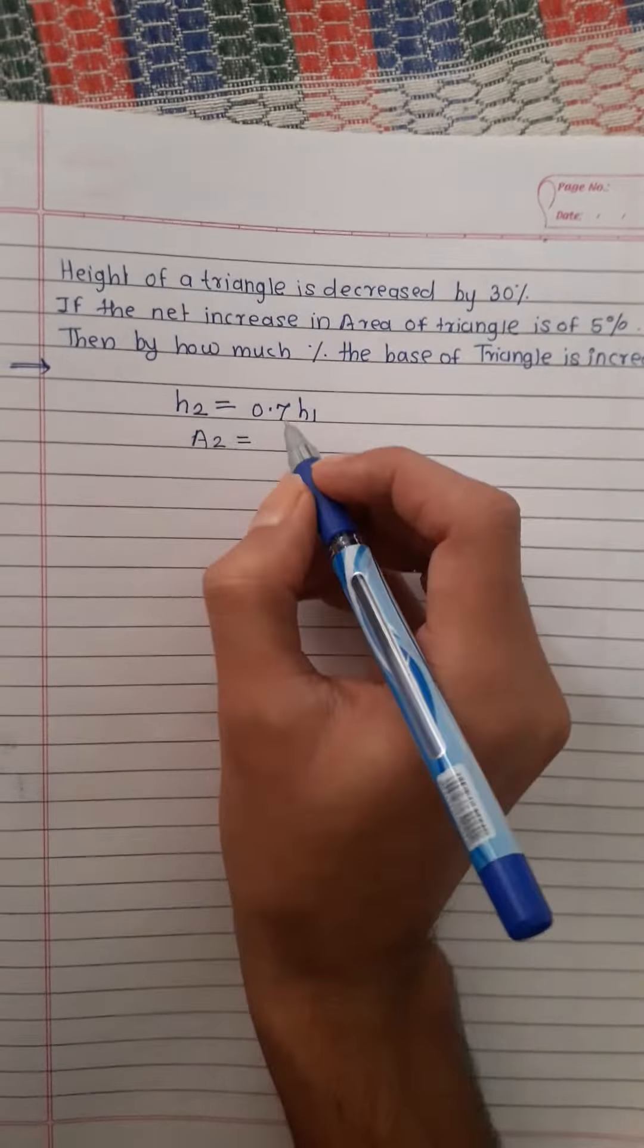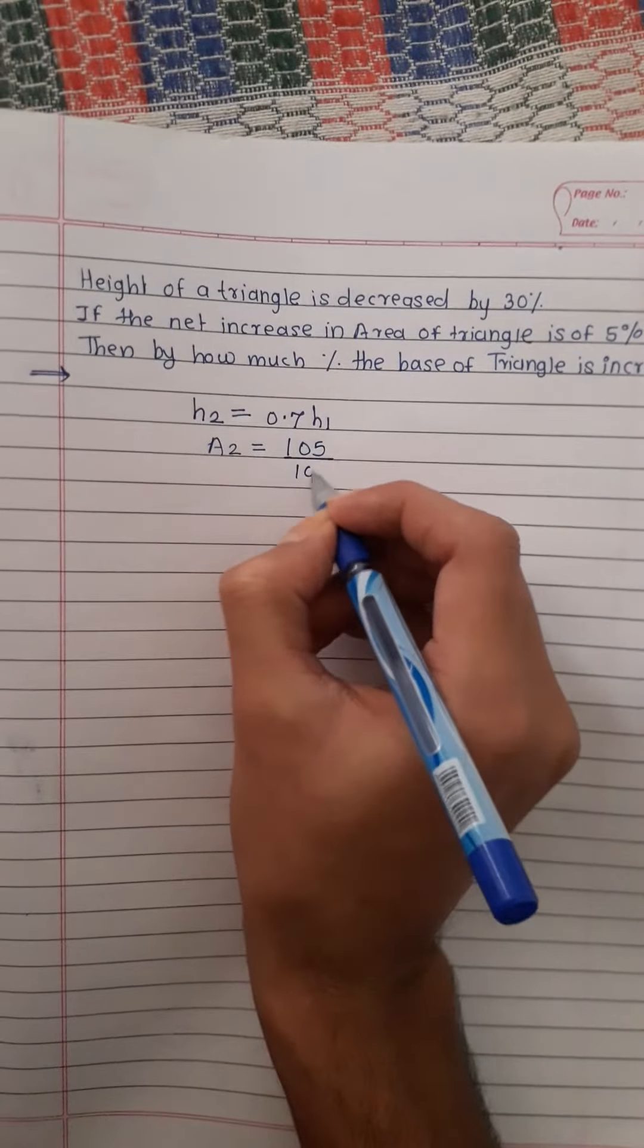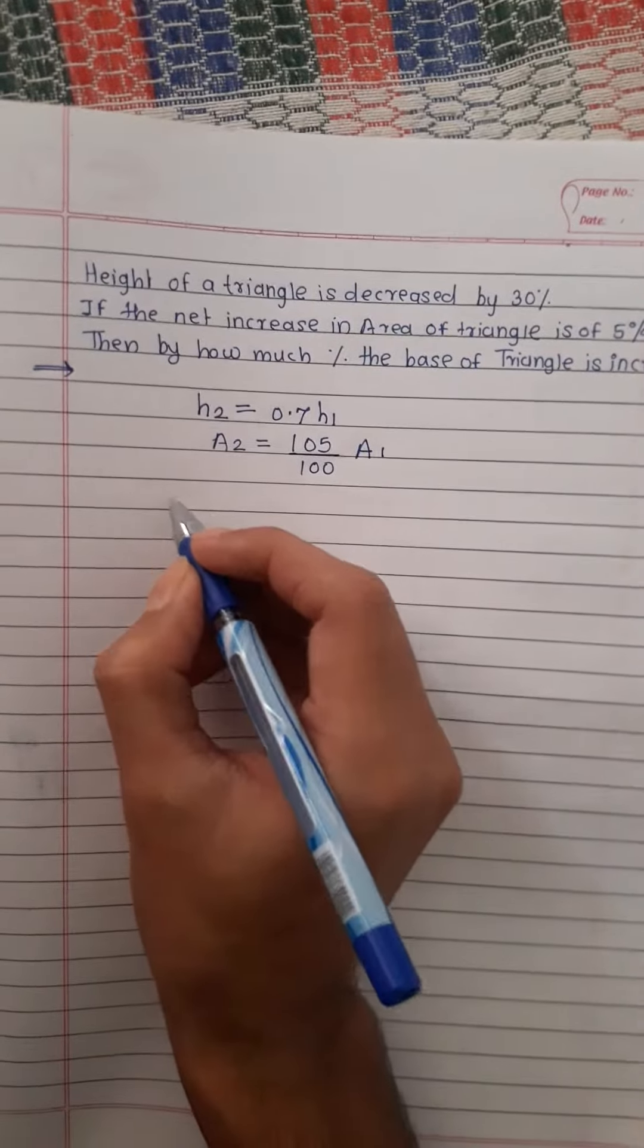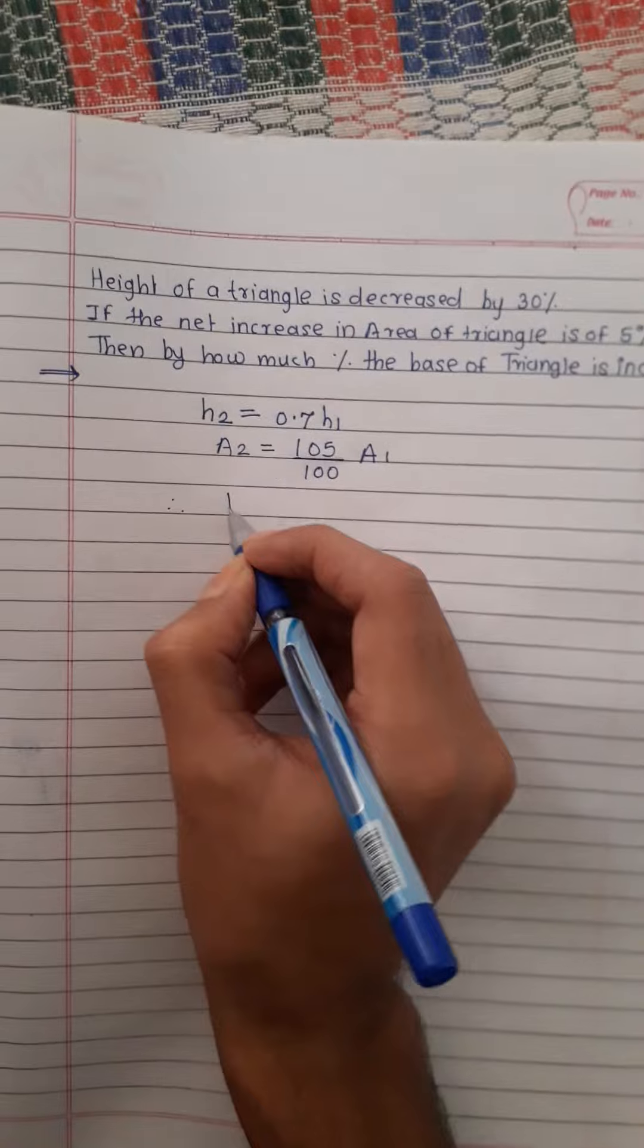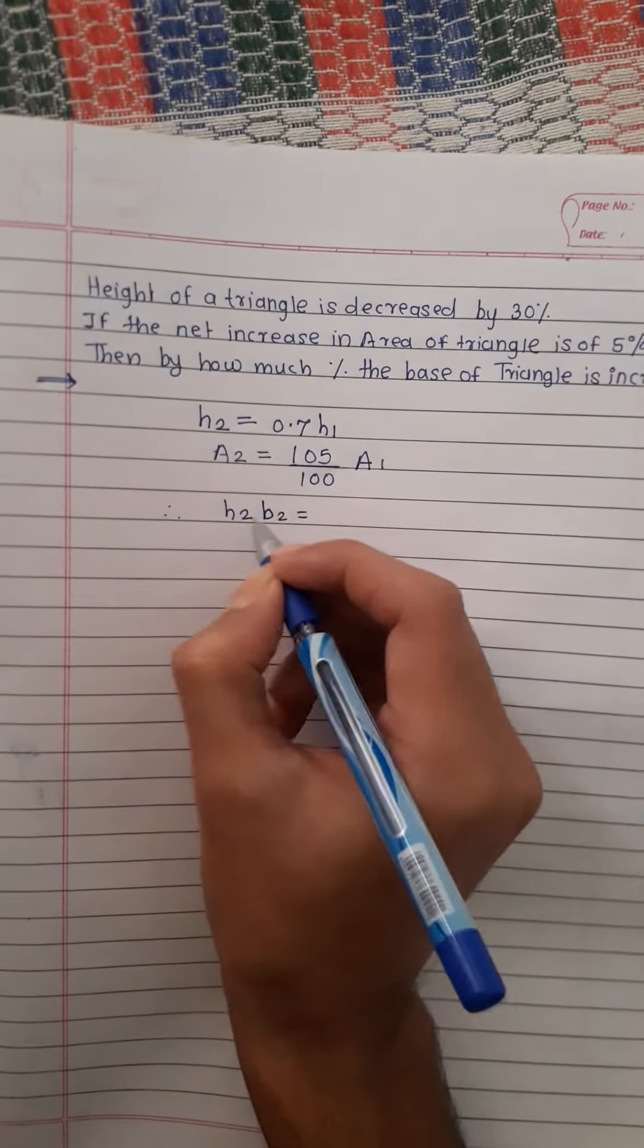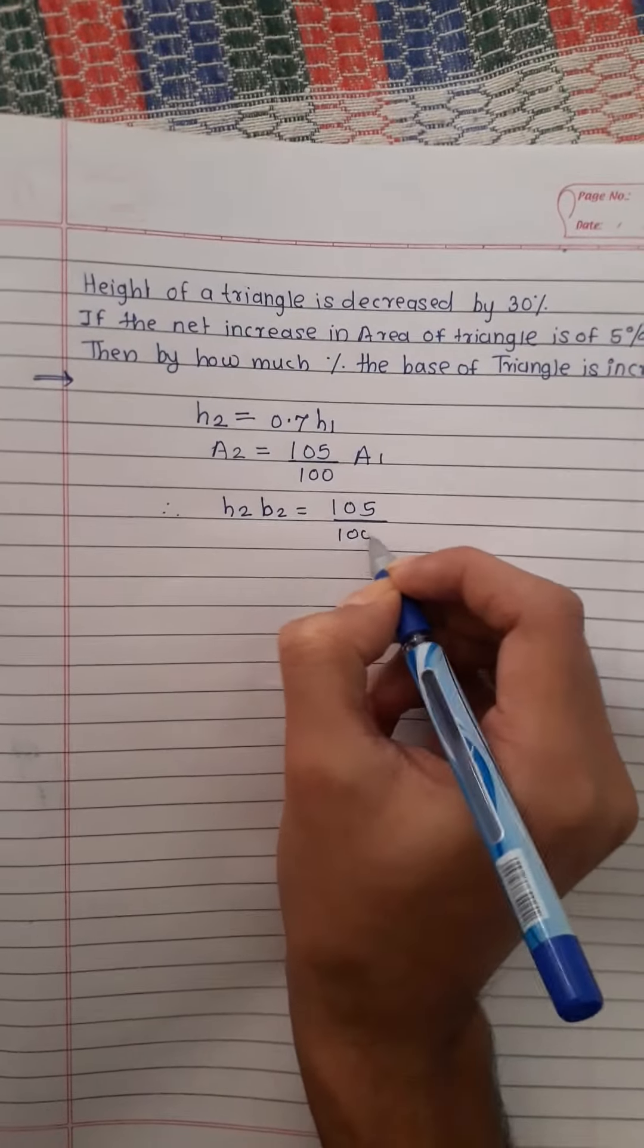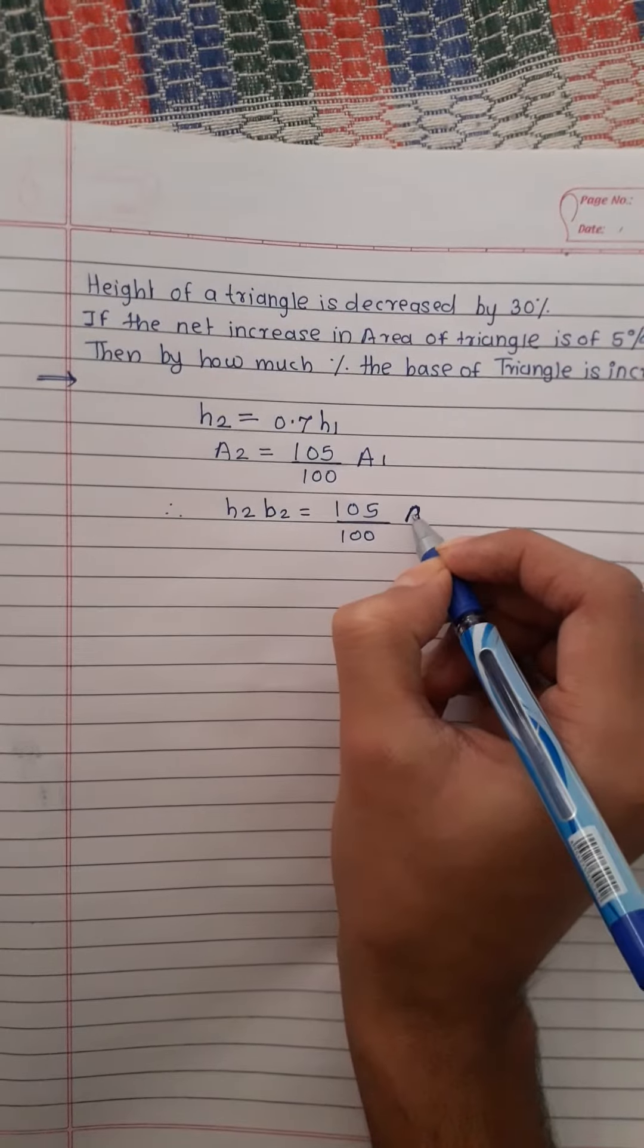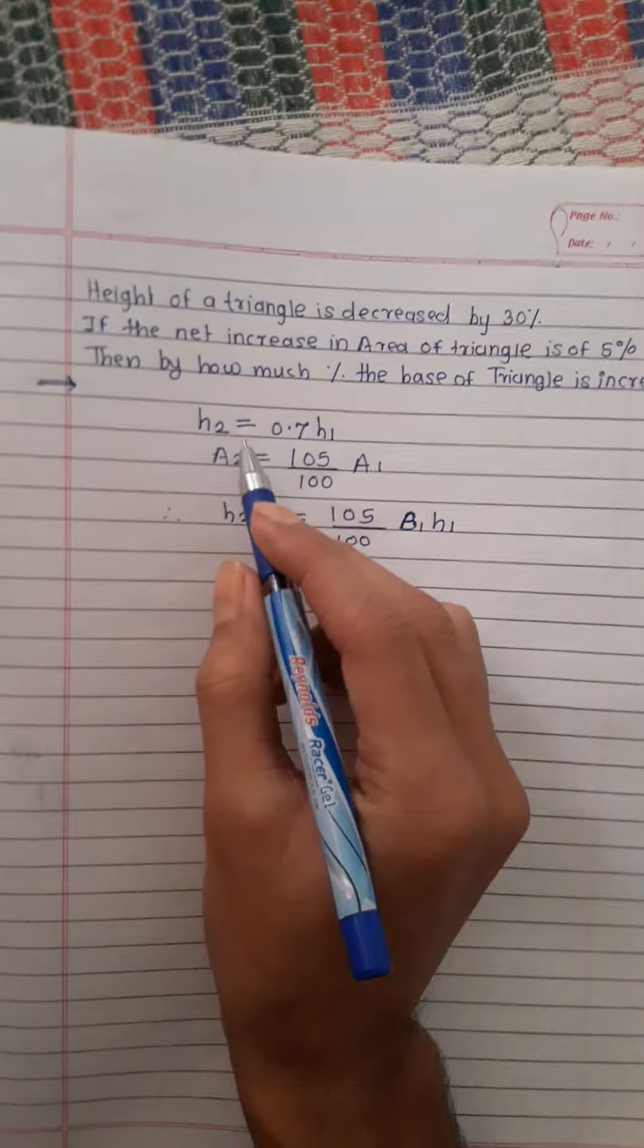Therefore we can rewrite A₂ as h₂ times b₂, height into base. This is 105 over 100, this is b₁, this is h₁. We know the value of h₂.